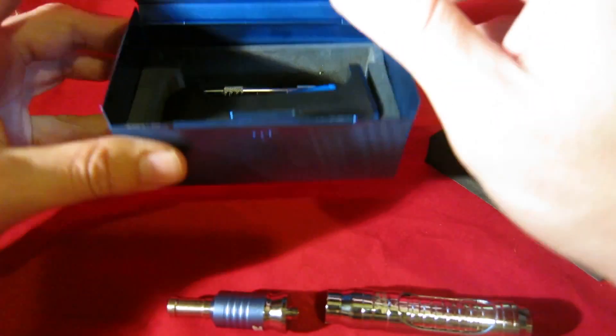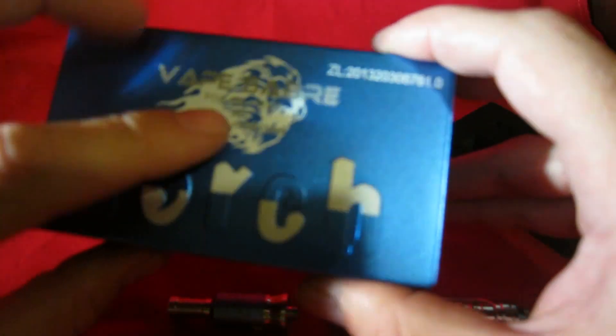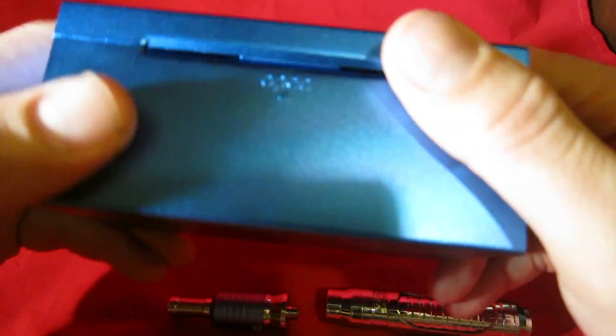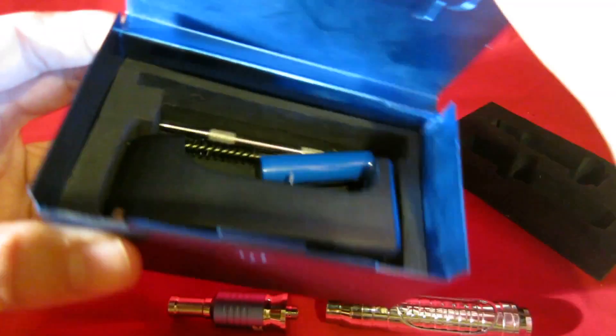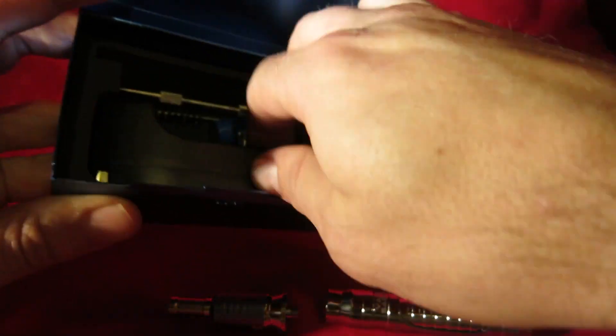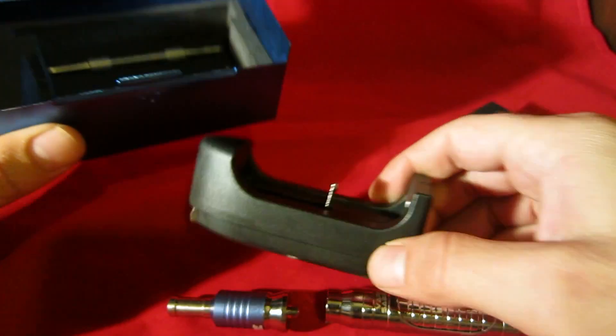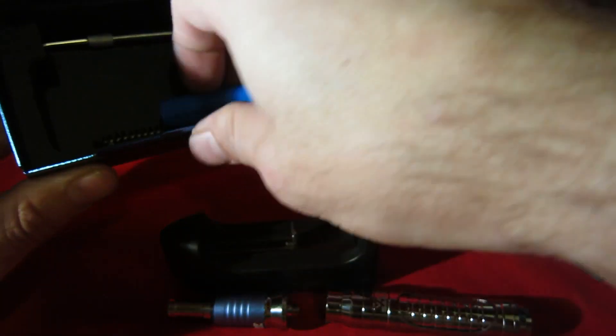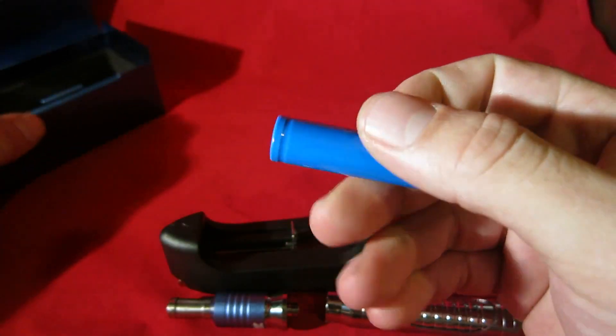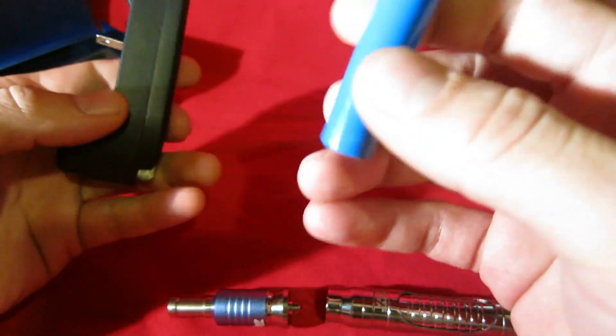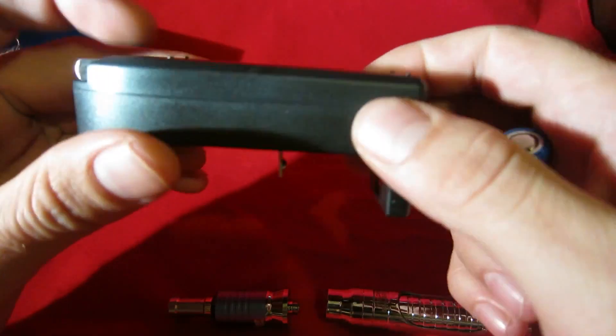So it comes in a tin box right here. It says Vape Saber right here. You can see it right here. This is a really nice tin box. It also comes with a charger. It comes with this style charger right here. And a battery. It's a high discharge battery.